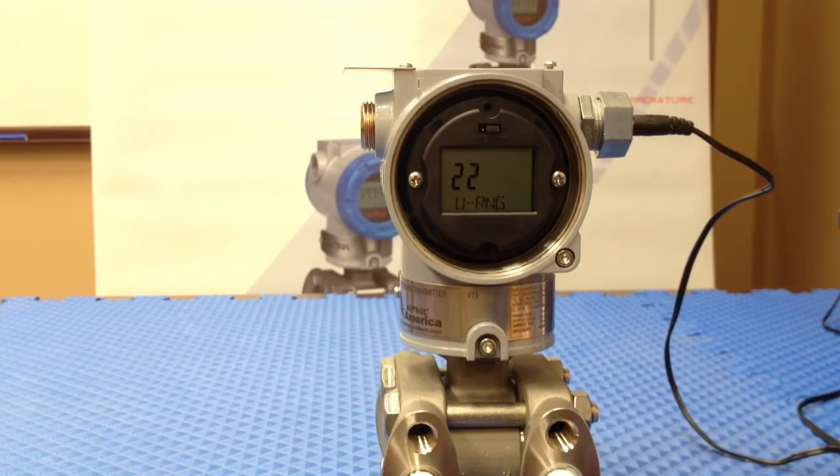That's as easy as it gets with setting the upper range value using the new version 7 firmware in the Autrol transmitter.